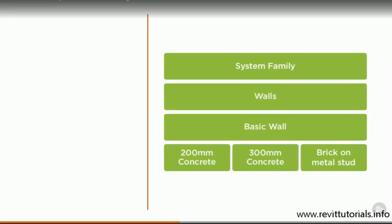Within each of these families, you have different family types. For the basic wall family, you might have one wall family which is a 200mm concrete wall, one which is a 300mm concrete wall, and one which is a brick outer leaf supported in an inner leaf of metal stud. These will all be different families.